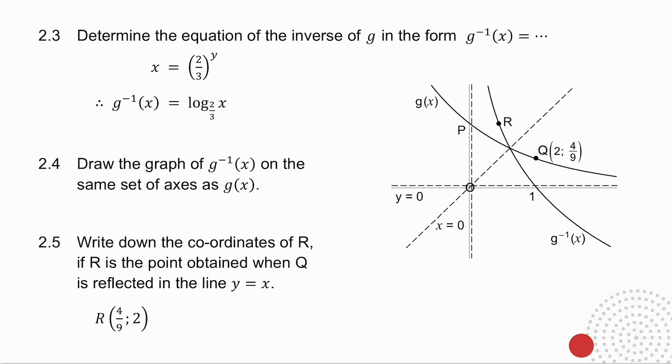2.5, I ask you for the coordinates of r, where r is the point q reflected in the line y equals x. Now remember, when you reflect a point in y equals x, your x and y values swap. So if q is 2, 4 over 9, then r is going to be 4 over 9, 2.